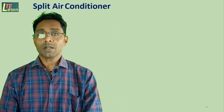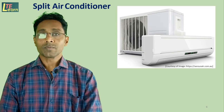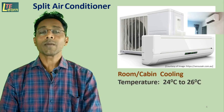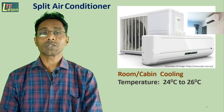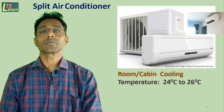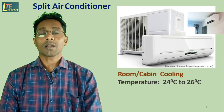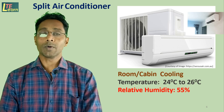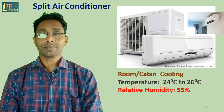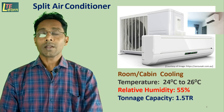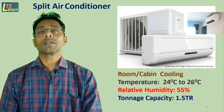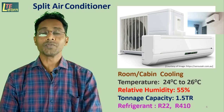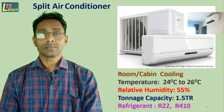Split air conditioner: It is used for cooling of air in a room or cabin. The temperature maintained in the room is 24 to 26 degrees Celsius and relative humidity is about 55%. Tonnage capacity of the split air conditioner is about 1.5 TR, and a refrigerant is used as part of a VCRS system.